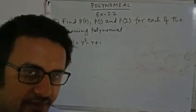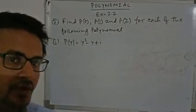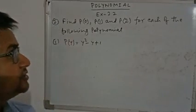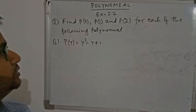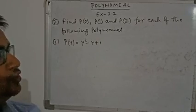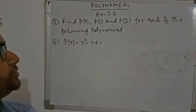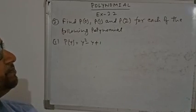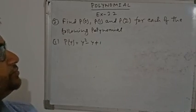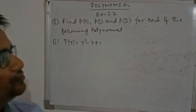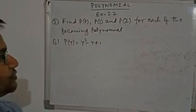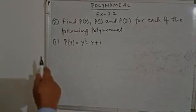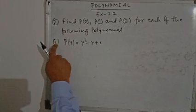Welcome everyone. This is the continuation of Exercise 2.2 from polynomials, question number 2. We have to find P(0), P(1), and P(2) for each of the following polynomials. The first question is given.